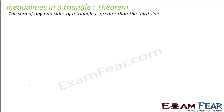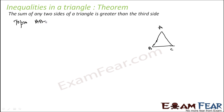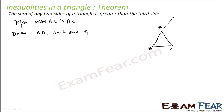This is the theorem: the sum of any two sides of a triangle is greater than the third side. Let's try to prove it. Take triangle ABC, and to prove AB plus AC is greater than BC, let's draw and extend a point D such that AD is equal to AC.